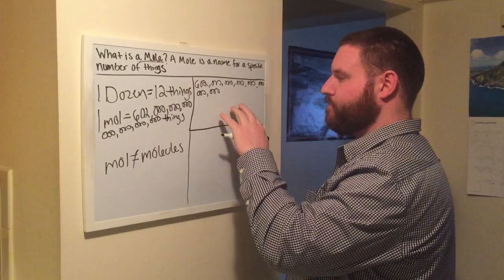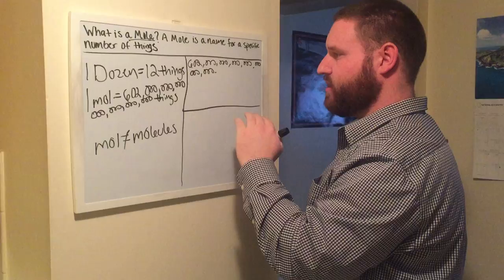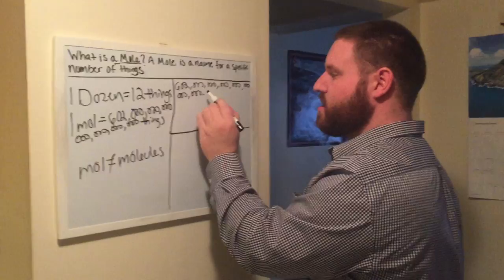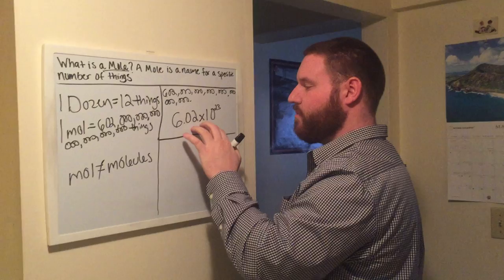Now, we want to put this into scientific notation to make it easier and prettier to work with. The decimal point ends here, and putting it into scientific notation, we want to put it in between one and ten, a nice number between one and ten. So here, that would be six. So we move the decimal point over to the left, twenty-three times, and this equals out to be 6.02 times ten to the twenty-third.